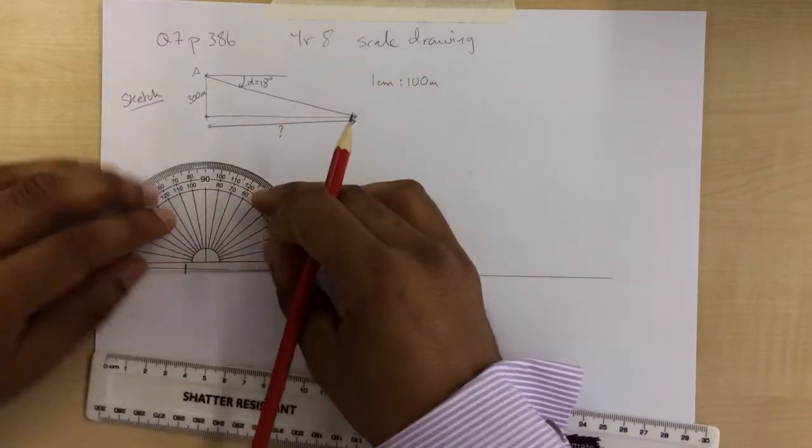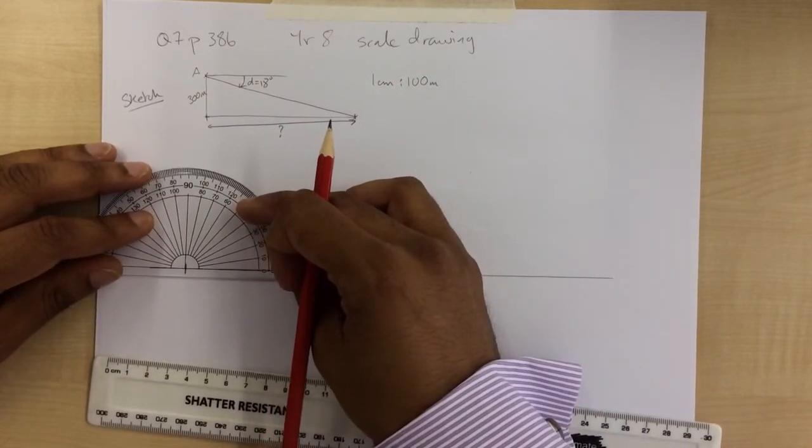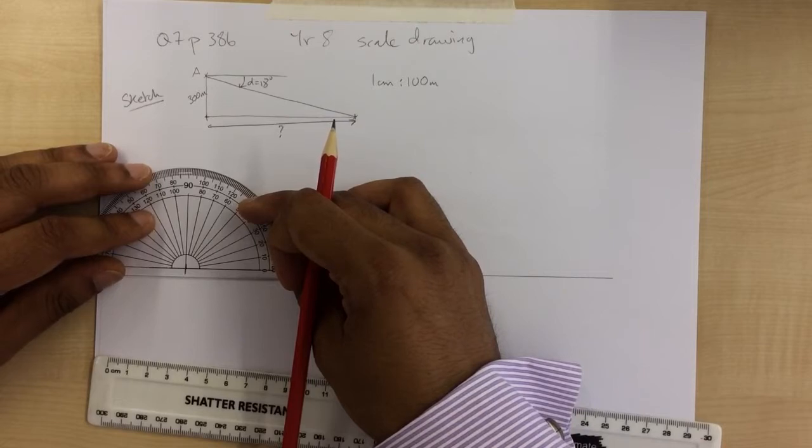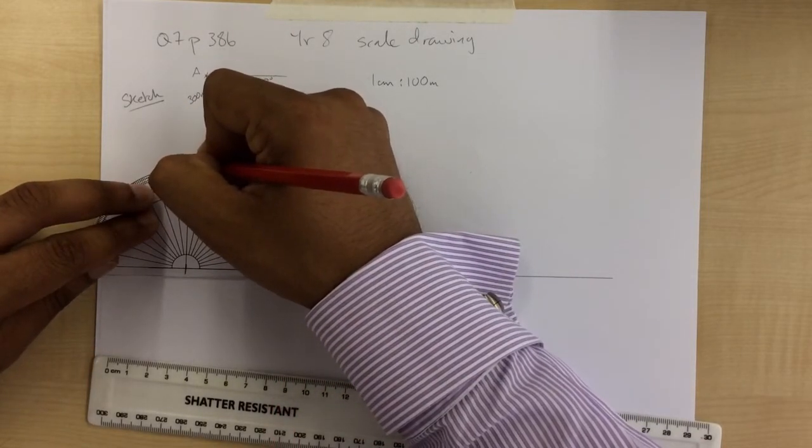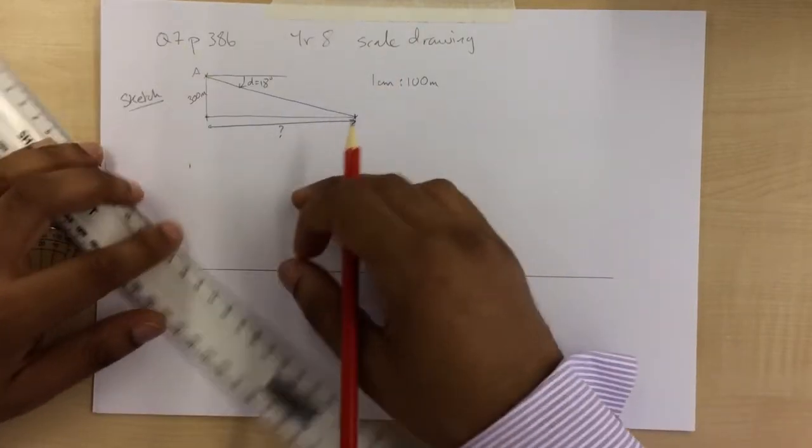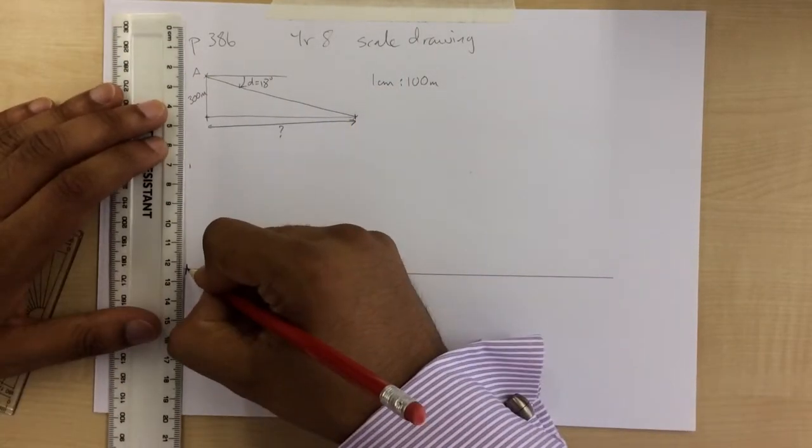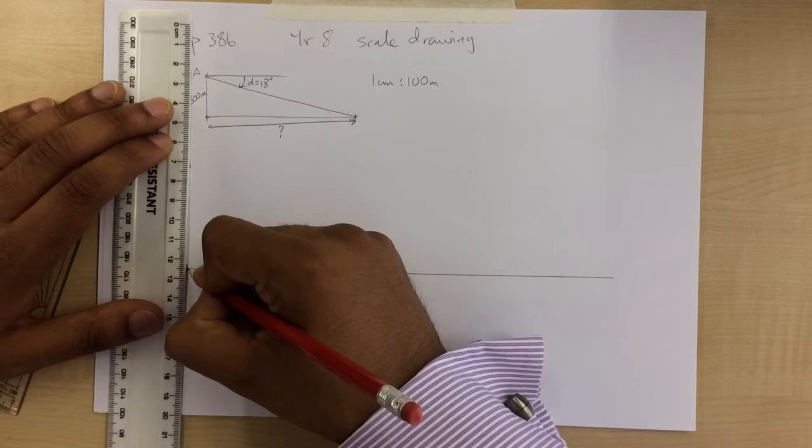And I'm going to put my protractor down on that mark, line it up, and I'm going to make a vertical line here, there, 90 degrees. Perfect.